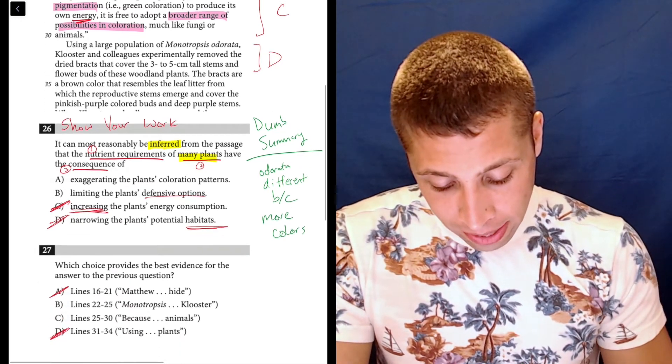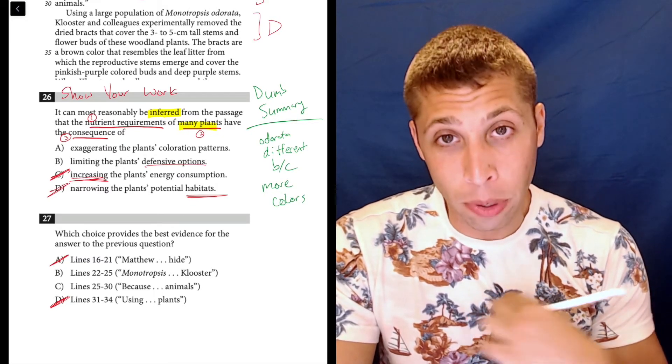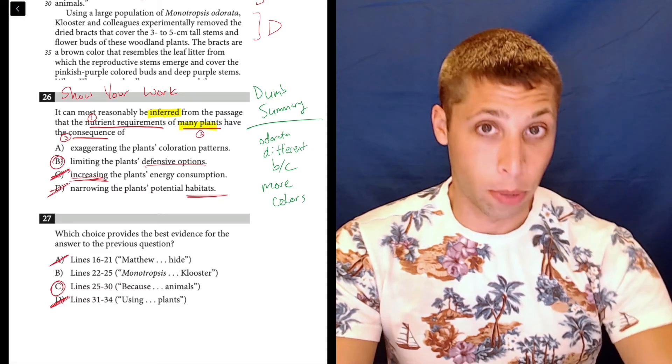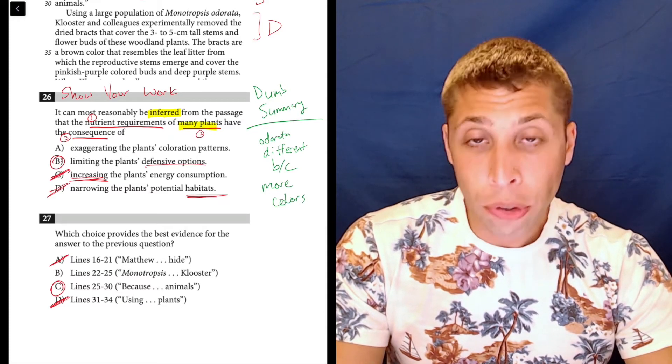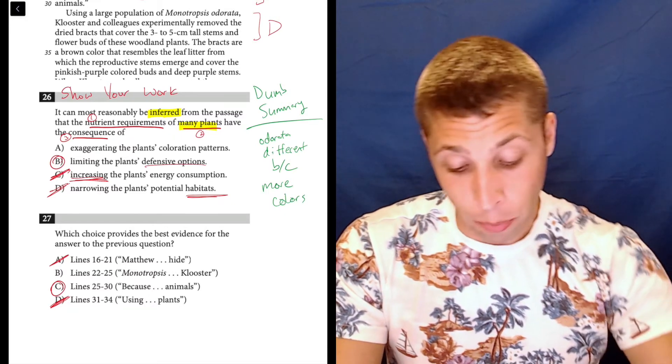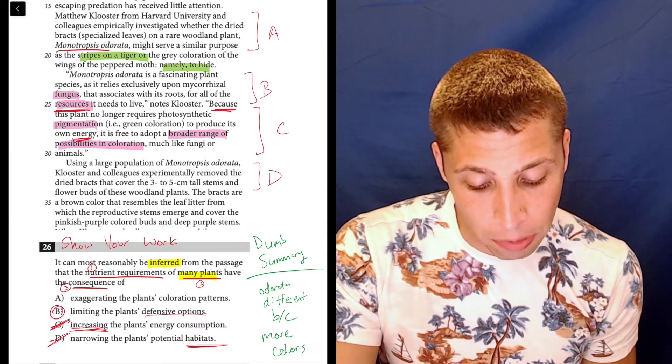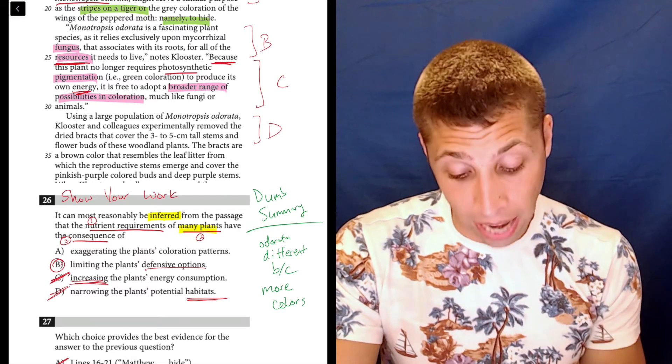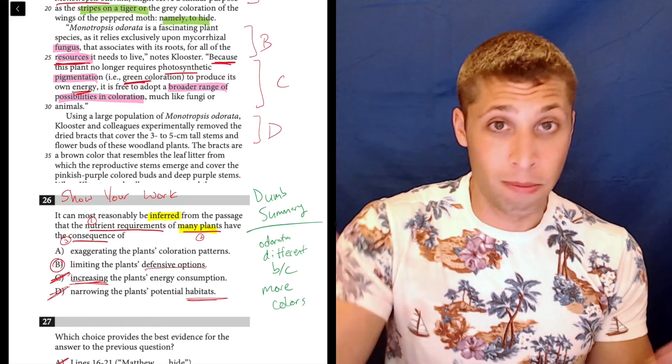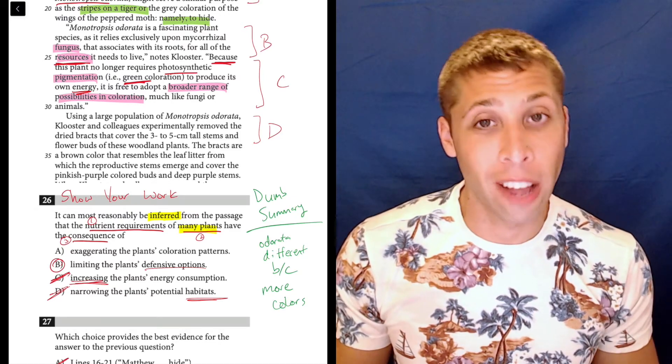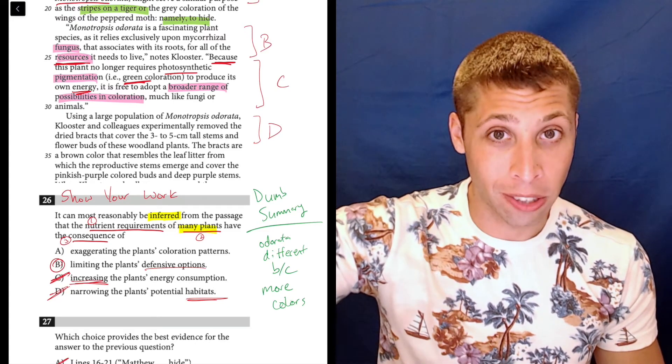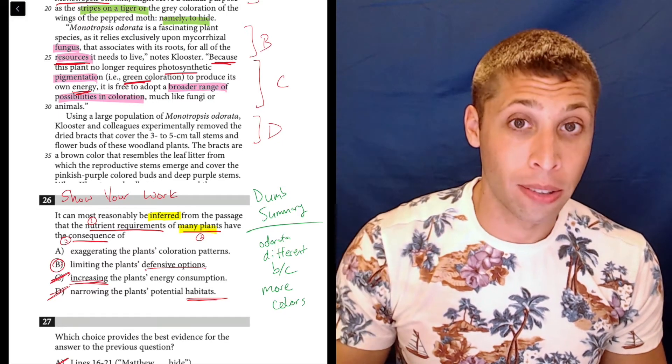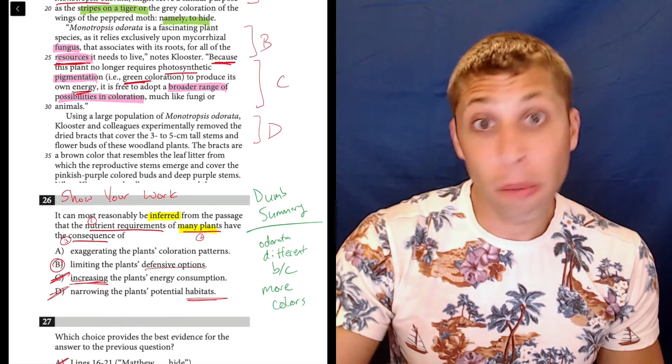This is something that I would have struggled with on an actual test. I would have been down to these choices A and B and I would have had to think about it a little bit more. But I think it's better at this point if I just give you the answers and explain why they are what they are. So the nutrients that other plants, the way that other plants get their nutrients is from the sun. And we know that because in line reference C, they talk about the pigmentation for photosynthesis. So they're getting their plants from the sun. When other plants get it from the sun, it means that they have to be green. Green, because that's how it works. I don't understand the chemistry of it, but that's what they're saying here in line reference C, is that they're green because of the way that they get their nutrients. That's most plants, many plants. However, they're using this particular plant as an example of what happens when you get your resources, your nutrients from somewhere else, from this fungus.